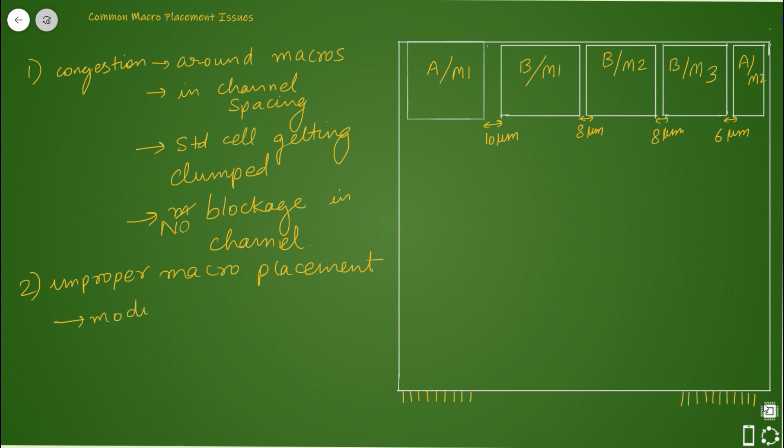Module splitting occurs because of improper macro placement. Modules should not split up - you should modify the macro placement so that hierarchy A and all macros inside A sit together for better placement quality. Congestion also comes from detours happening over the macros.